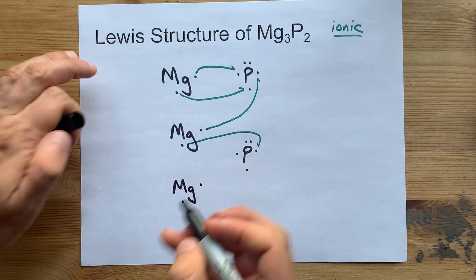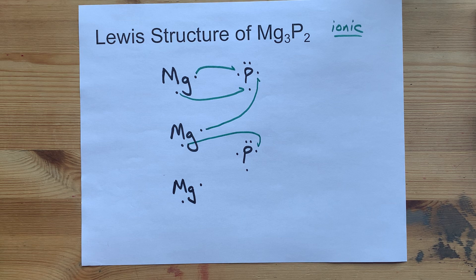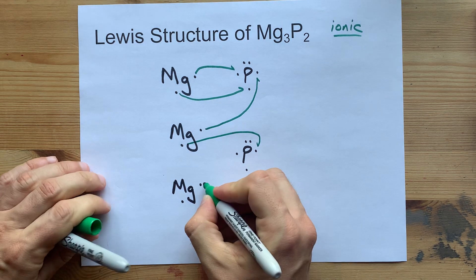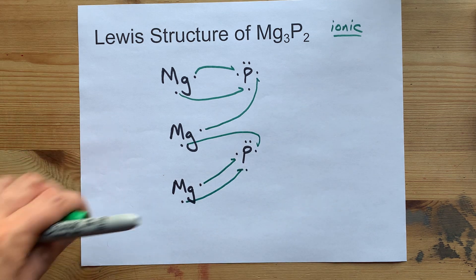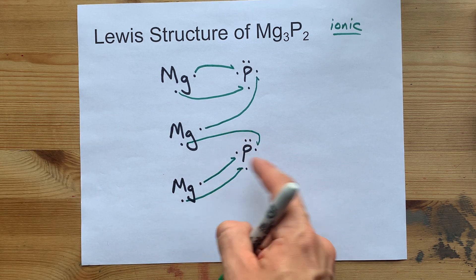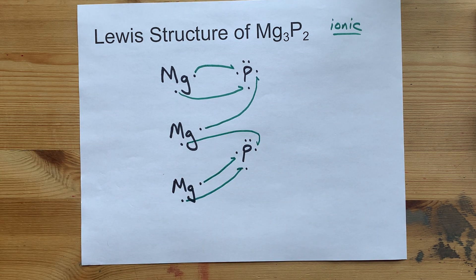Bring another Mg in. That'll bring the extra 2 that we need. Now that's what I am talking about. Now that phosphorus is happy. Brought 5, gained 3. And that magnesium is happy. Gave away both of his.